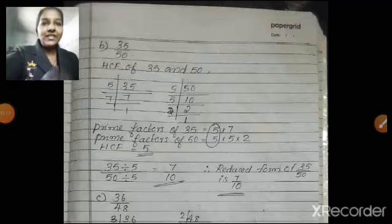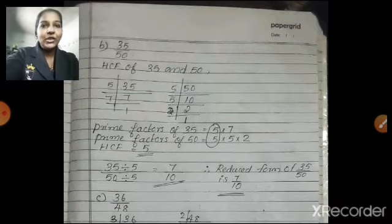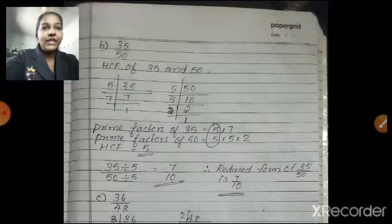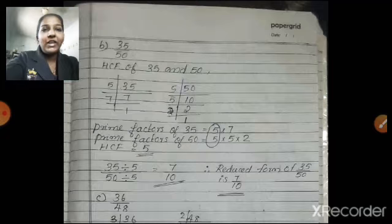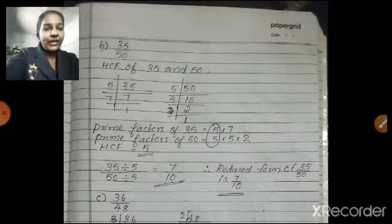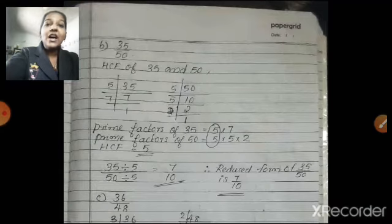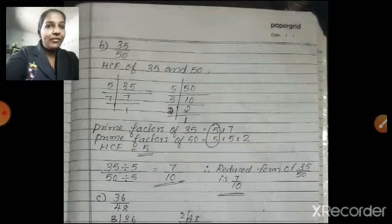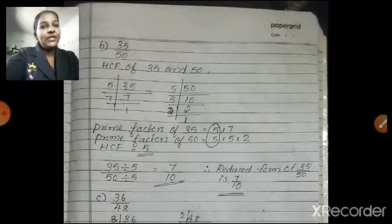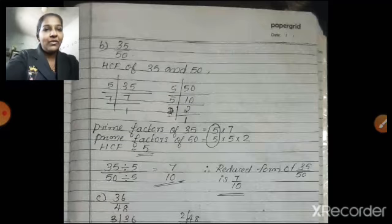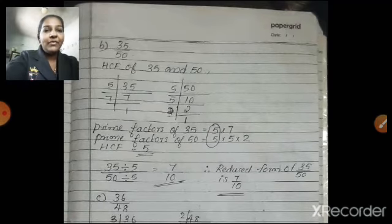You have to reduce 35 by 50 to its lowest term. Take the HCF of the numerator and denominator — the numerator is 35 and the denominator is 50. Do the prime factorization. You will get the factors of 35 as 5 × 7, and when you prime factorize 50, you get 5 × 5 × 2. Now take the common factors — 5 is the only common factor here, so HCF equals 5. Divide 35 by 5 and 50 by 5: 35 ÷ 5 is 7 and 50 ÷ 5 is 10. The reduced form of 35 by 50 is 7 by 10.